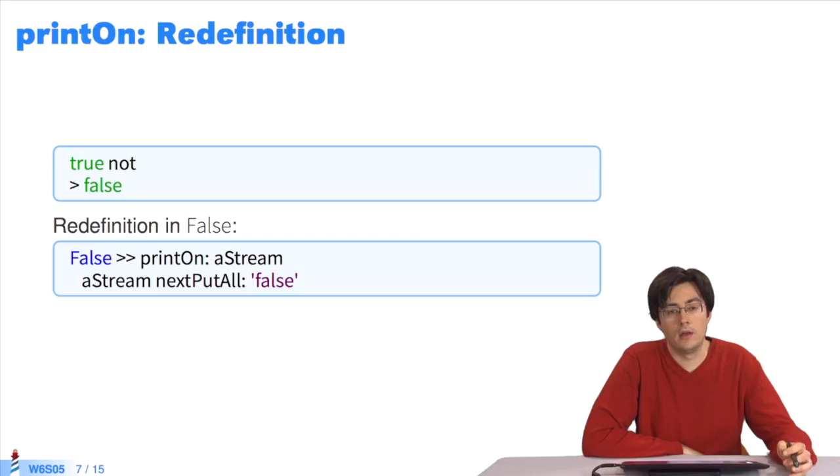We just looked at refinement. The delay class refines the implementation of the printOn method in the object class. But a class can also completely redefine behavior.